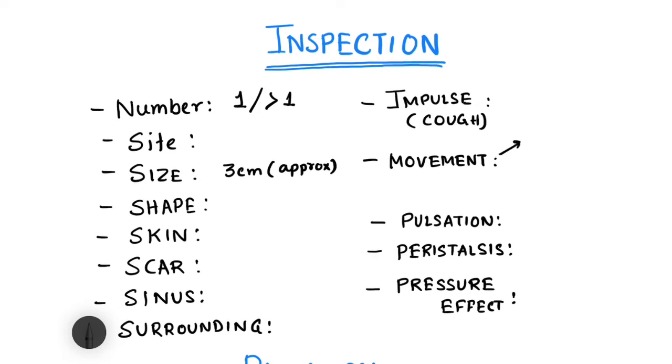Then you check for any visible cough impulse, then for movement - whether the lump is moving with respiration, moving with deglutition, or moving with protrusion of tongue. If the lump is moving with respiration, that indicates the lump is of diaphragmatic origin or is associated with liver or spleen, mostly in abdominal lumps.